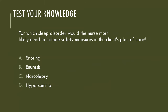For which sleep disorder would the nurse most likely need to include safety measures in the client's plan of care — snoring, enuresis, narcolepsy, or hypersomnia? The correct answer is narcolepsy, because sleep episodes can occur suddenly during daytime hours when a person is involved in any type of activity.